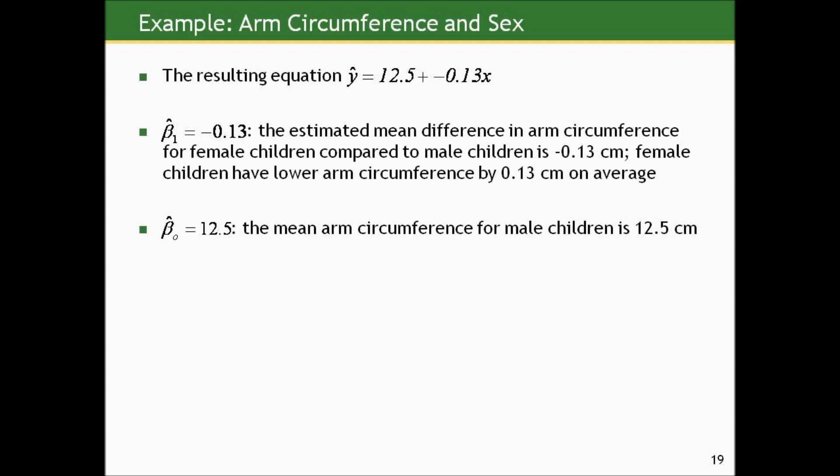The resulting equation from the data is: Y-hat, the estimated mean arm circumference, equals 12.5 plus negative 0.13 times X. The slope is negative 0.13 centimeters of arm circumference per centimeter — actually, both units are centimeters so it's in centimeters per unit of X. This is the estimated mean difference in arm circumference for female children compared to male children: female children have lower arm circumference by 0.13 centimeters on average. The intercept of 12.5 is the mean arm circumference for male children in this sample.